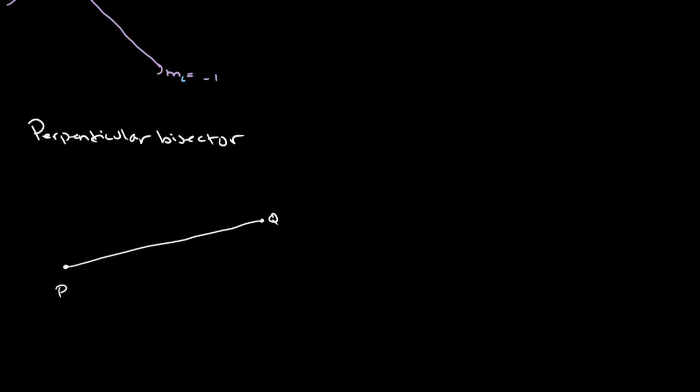Now, what the perpendicular bisector is, is it's the line that's perpendicular to the line PQ, and it runs through the midpoint. So, let's say that this right here is m, or the midpoint of our line. Then our perpendicular bisector will run through m.